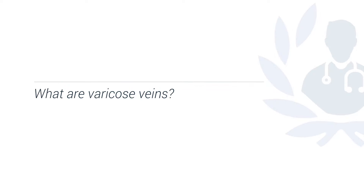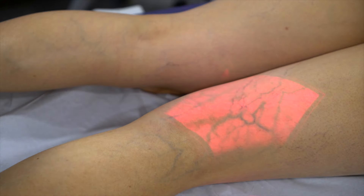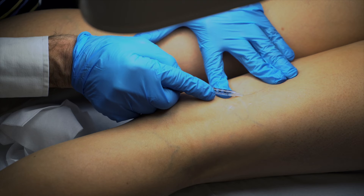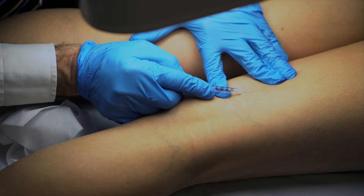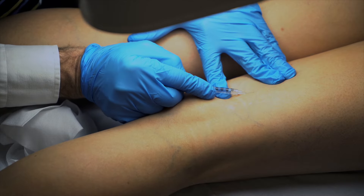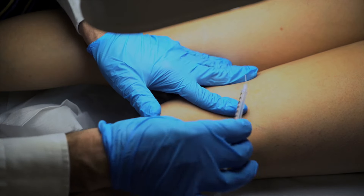Varicose veins are abnormal dilated veins that predominantly occur in the leg. They can also occur in the pelvis and often around the womb, but most patients get varicose veins within the leg, and that's the commonest form of presentation. It occurs in about one in three individuals throughout their life. It actually starts at a young age, in the teenage years, but it's far more common as you get older.